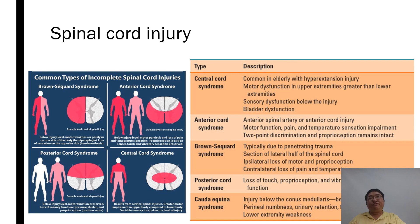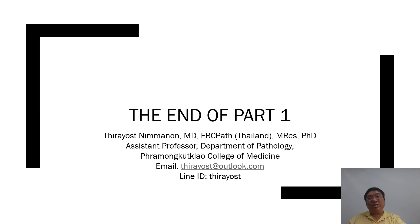Spinal cord injury involves different syndromes: Brown-Séquard, anterior cord, posterior cord, and central cord. Please relate these to the anatomy of the different pathways within the spinal cord. This is the end of part one. I took a lot of time to explain the basic principles of brain pathology because they require some explanation. After this, part two will go faster. Please come back and continue to part two.